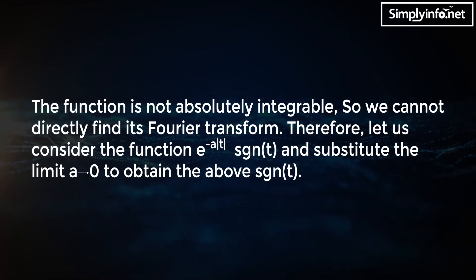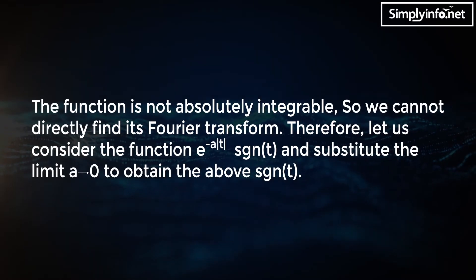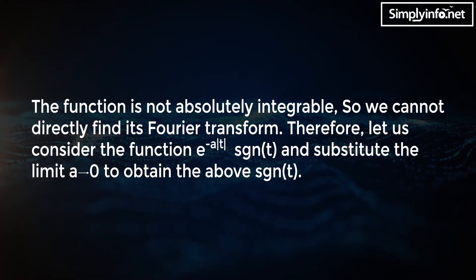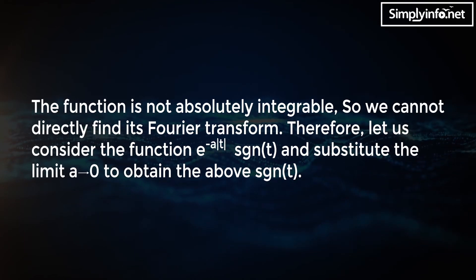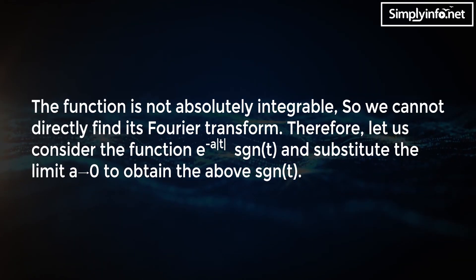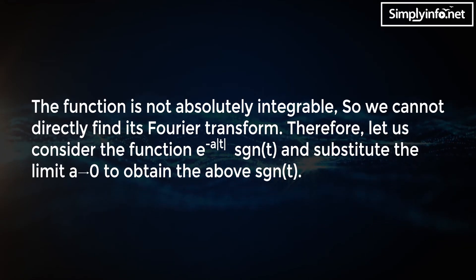Therefore, let us consider the function e^{-a|t|} · sgn(t), and substitute the limit a to zero to obtain the signum function sgn(t).